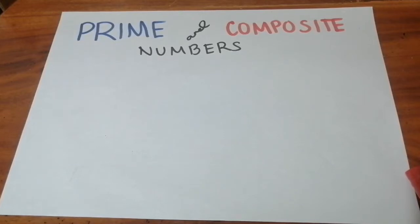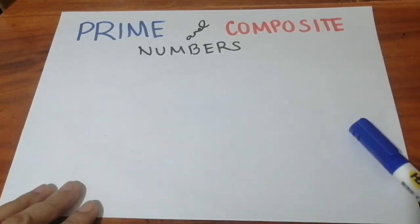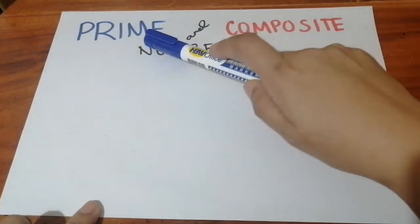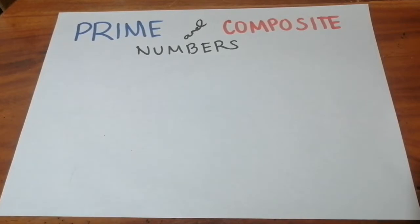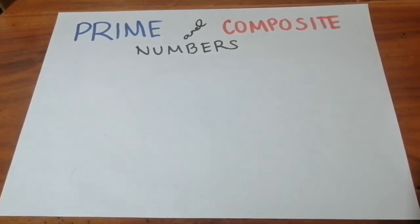So before I make a video about prime factorization, I will first discuss what is the difference between a prime number and a composite number. Prime numbers are numbers that have two factors only. Last time, we also discussed factors and multiples in another video.